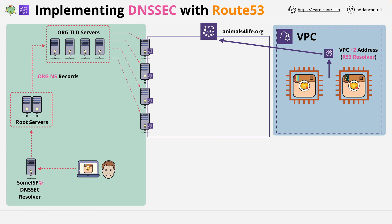You should be familiar with this architecture — this is how Route 53 works normally. Using the animalsforlife.org domain, a query would start with our laptop, go to a DNS resolver, then to the root servers looking for the .org top-level domain, then to the .org TLD name servers, and finally to the four Route 53 name servers hosting the animalsforlife.org zone. On the right, we have an AWS VPC using the Route 53 resolver, and instances can query the domain from inside the VPC.